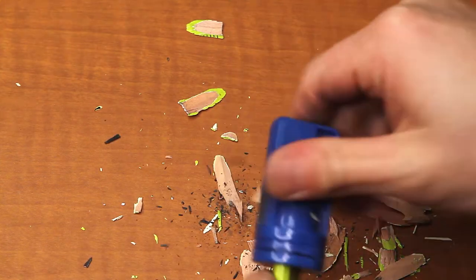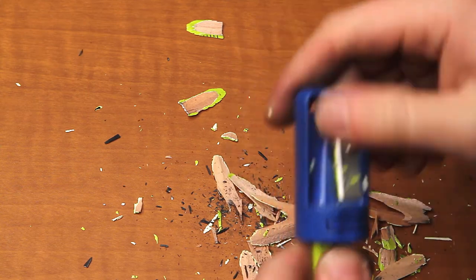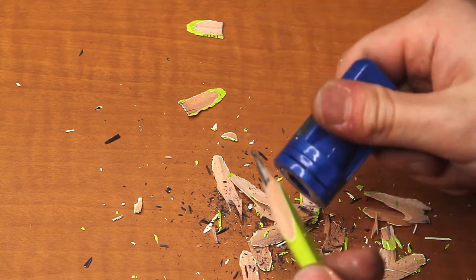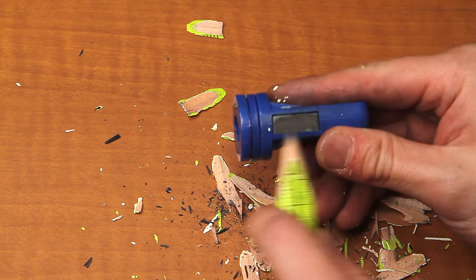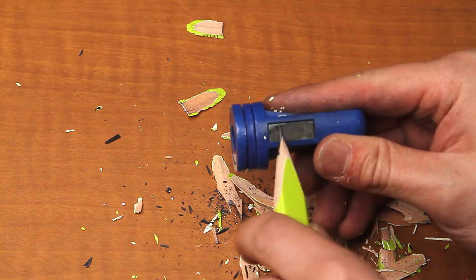Once all the shards are removed by the blade, take out the pencil. To further sharpen the lead tip, use the sanding block to file down the lead to the desired sharpness.